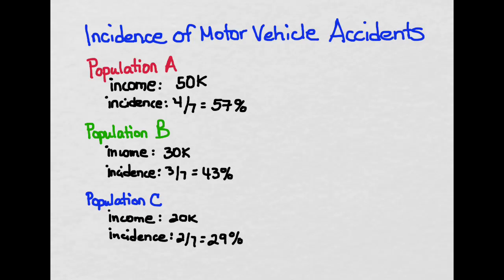In this example what we're looking at is incidence of motor vehicle accidents. We're interested in the relationship between income and incidence of car accidents. We have three populations, and we know the income, the average income of each population, and we know the incidence of car accidents within each of those populations.